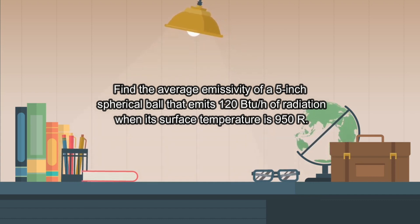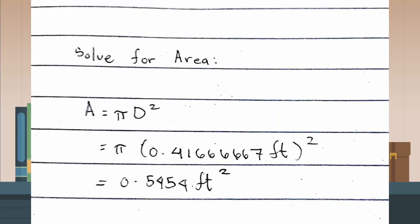Before solving for emissivity, you must first find the area. So the formula for the area is A equals pi D squared.